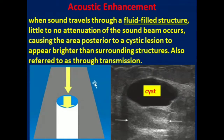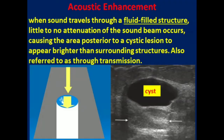In this image, it is explained that the beam of sound is traveling through solid tissue. Whenever it reaches a cystic lesion or cystic structure, there will be lesser attenuation or no attenuation. So the area posterior to this fluid-filled structure will appear brighter or hyperechoic compared to the other area. This is called acoustic enhancement.